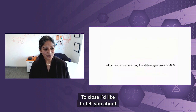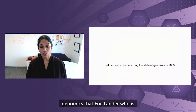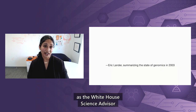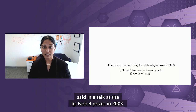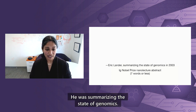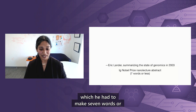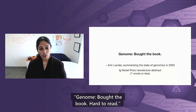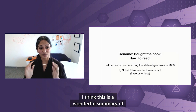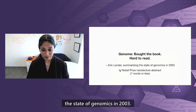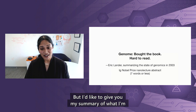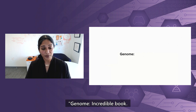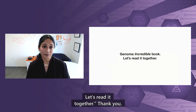To close, I'd like to tell you about a nice short summary of genomics from Eric Lander, now serving the Biden administration as the White House science advisor, in a talk at the Ig Nobel Prizes in 2003. He was summarizing the state of genomics and his abstract had to be seven words or less. His summary: 'Genome, bought the book, hard to read.' I think that's a wonderful summary of genomics in 2003. But I'd like to give my own summary of what I'm saying in this talk and my hope for genomics for the future: 'Genome, incredible book. Let's read it together.' Thank you.